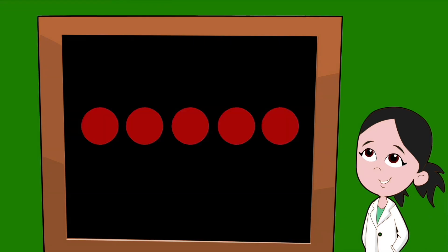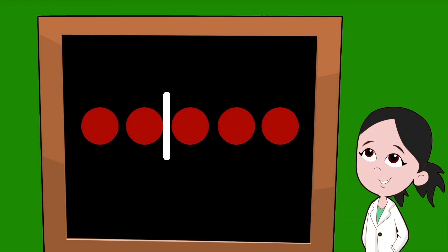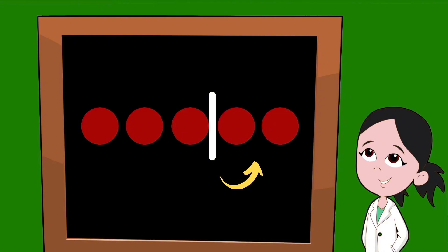Let's use dots to represent our numbers. To find partners, we simply split up the dots using a line. So here we would have one dot on the left and four dots on the right. That pair of numbers is partners: one and four. To make sure we don't miss a number, we simply move our line over one dot at a time to make sure we find all the partners.